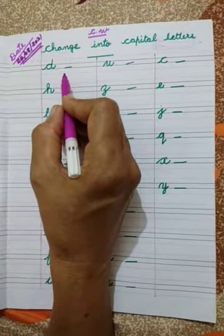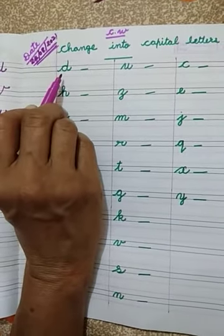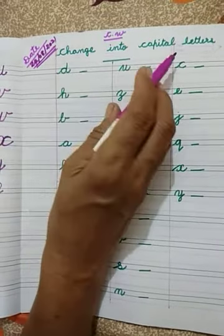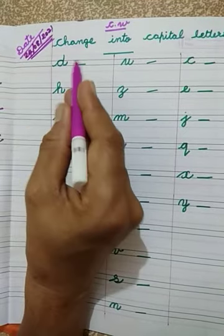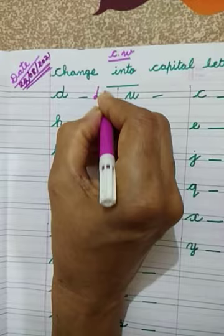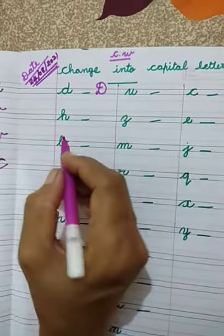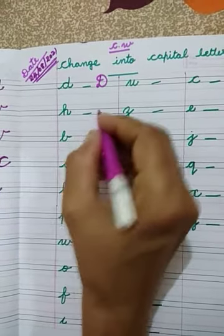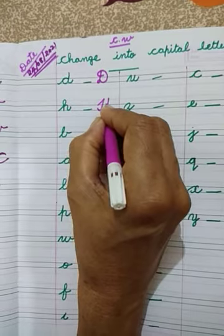Letters start. First letter — which letter is this? Cursive Small letter D. Then the question: Change into Capitalities. A small letter D starts from the first line. This is Cursive Capitalities. Next letter D. Next letter H. Then we have to write here Cursive Capitalities.